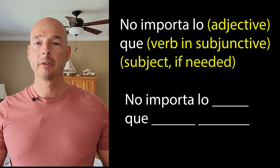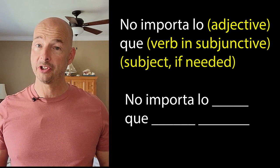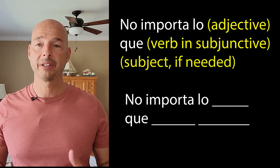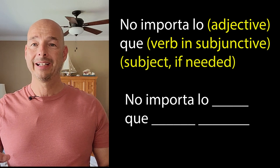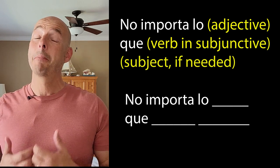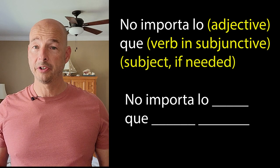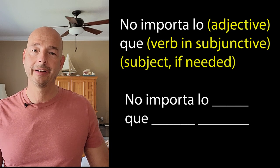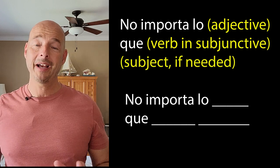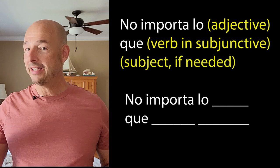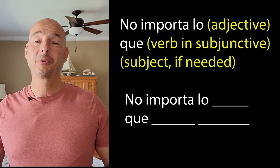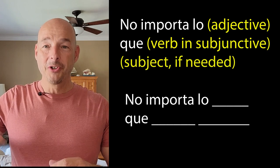And here's the construction: 'No importa lo.' In this gap you're going to put your adjective, which is going to agree in number and gender with whatever we're talking about — you'll see what I mean as we go through some examples. Then we have 'que.' After 'que,' you're going to put the verb, but it's going to have to be in the subjunctive mood. Now, I know I talk about the subjunctive a lot, but it's so interwoven in Spanish that you have to learn it. And one of the easiest ways to learn it is to learn constructions like this — formulas, some people call them — and to know what triggers it.